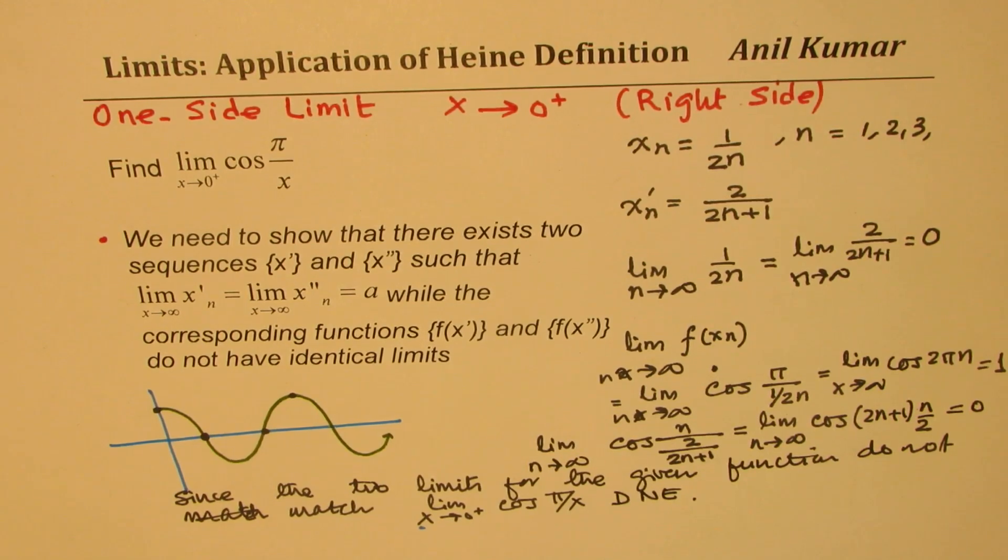Perfect. So many trigonometry functions you could find limit, especially you could prove that the limit does not exist using Heine's definition. That is the focus of this particular video. I'll take up one more example and I hope that will help you to understand how to prove that the limits do not exist, whether it is one-side or both sides. I hope that makes sense. Feel free to write your comments and share your views. If you like and subscribe to my videos that'll be great. Thanks for watching and all the best.